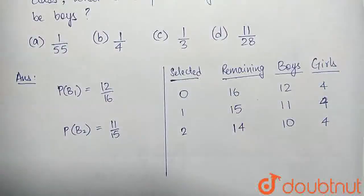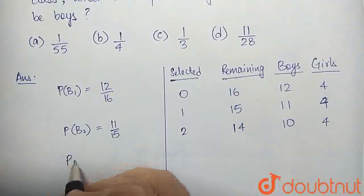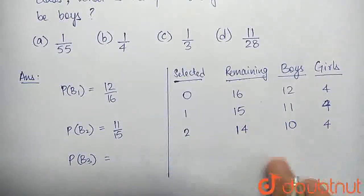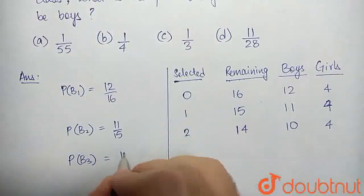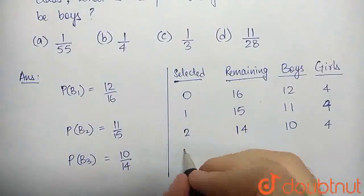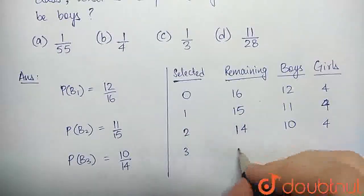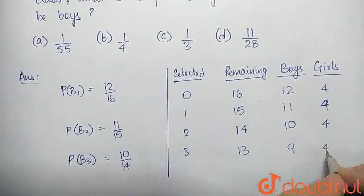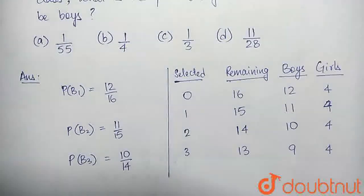The third selection, we also want that one to be a boy. Now, there are 10 boys in a class of remaining 14 students, so the probability would be 10 by 14. Finally, we have 3 students selected, there are 13 students remaining, of which 9 are boys and 4 are girls.